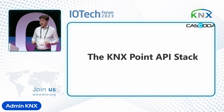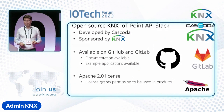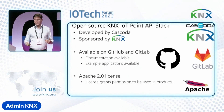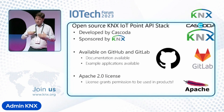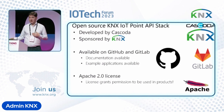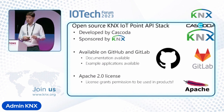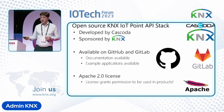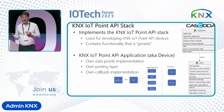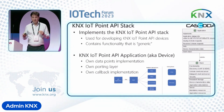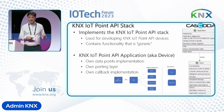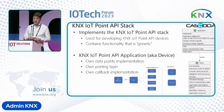Let's take a look at the KNX IoT Point API stack. It is an open source project sponsored by the KNX organization, which paid Cascoda to develop it. It is available on GitHub and GitLab — go to the KNX booth in Hall 2 where you can scan a QR code. It is based on an Apache 2 license. The KNX IoT Point API stack implements KNX using the same data models and semantics as the other KNX transports, such as KNX Classic.